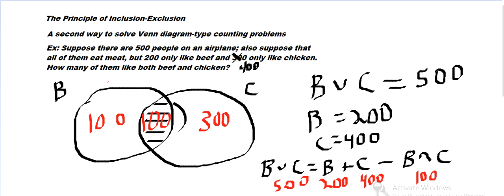We can double-check: we've got 500 people in total, all of them like meat, either beef or chicken. 400 like chicken and 200 like beef, so 100 like both.